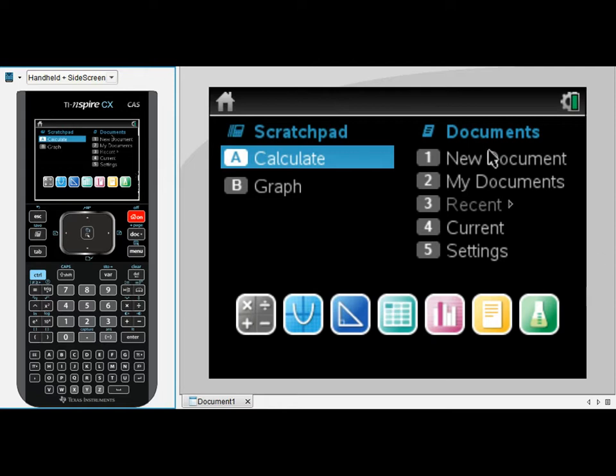From the home screen, if you wish to work in document mode, either type 1 or click on new document to open a new document, then select to enter a graph page into that document. Alternatively, click on the graph icon down here which will insert a graph page into your current document.